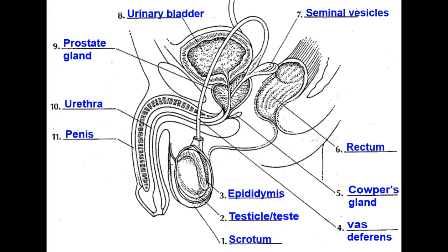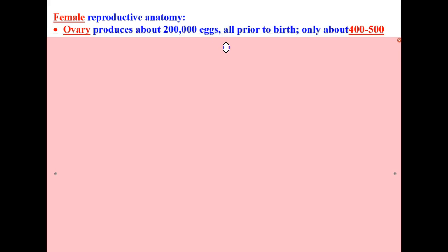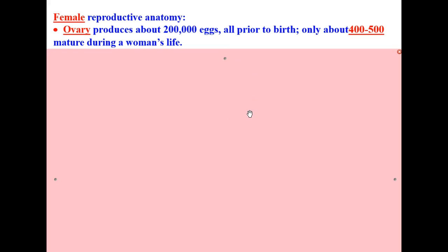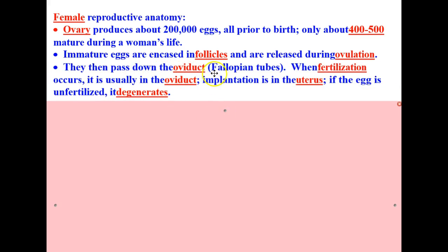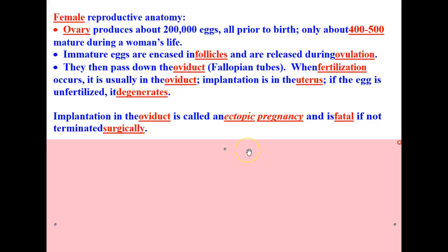Next, let's discuss the female reproductive anatomy. We'll start with the ovary, which produces about 200,000 eggs — all of them produced prior to birth. Only about 400 to 500 mature during a woman's life. Immature eggs are encased in follicles and are released during ovulation. They then pass down the oviduct, also called the fallopian tubes. When fertilization occurs, it is usually in the oviduct. Implantation, though, takes place in the uterus. If the egg is unfertilized, it degenerates. Implantation in the oviduct can cause what is called ectopic pregnancy, which is fatal if not terminated surgically.